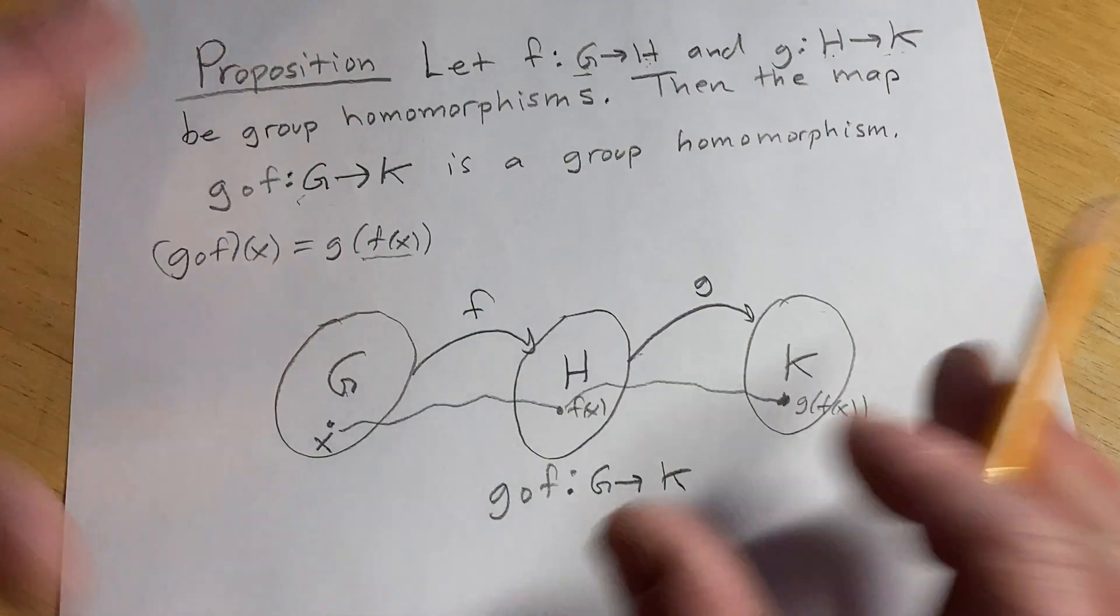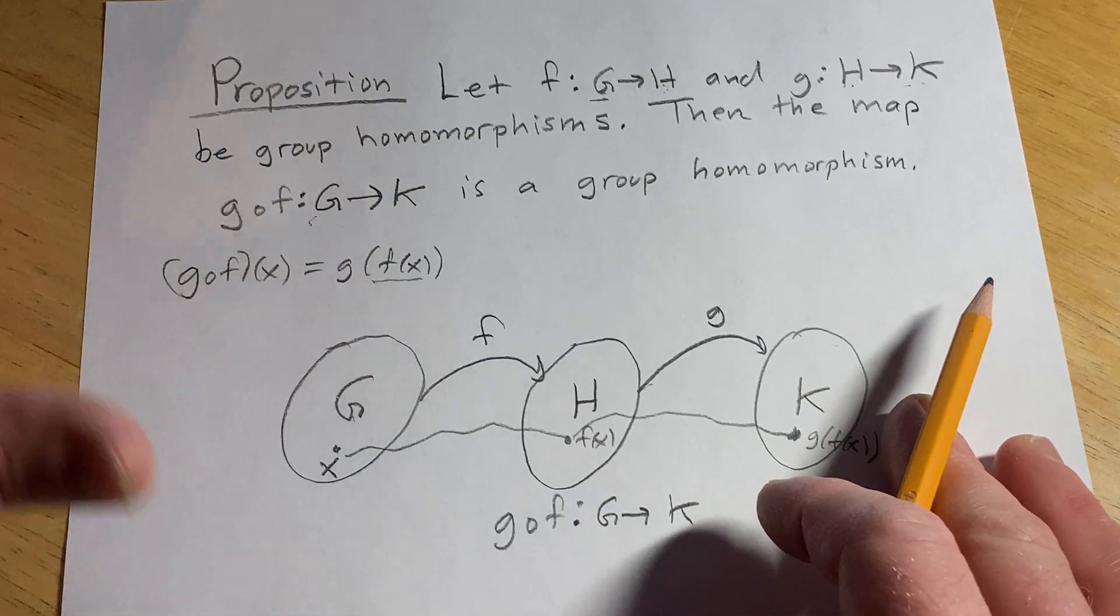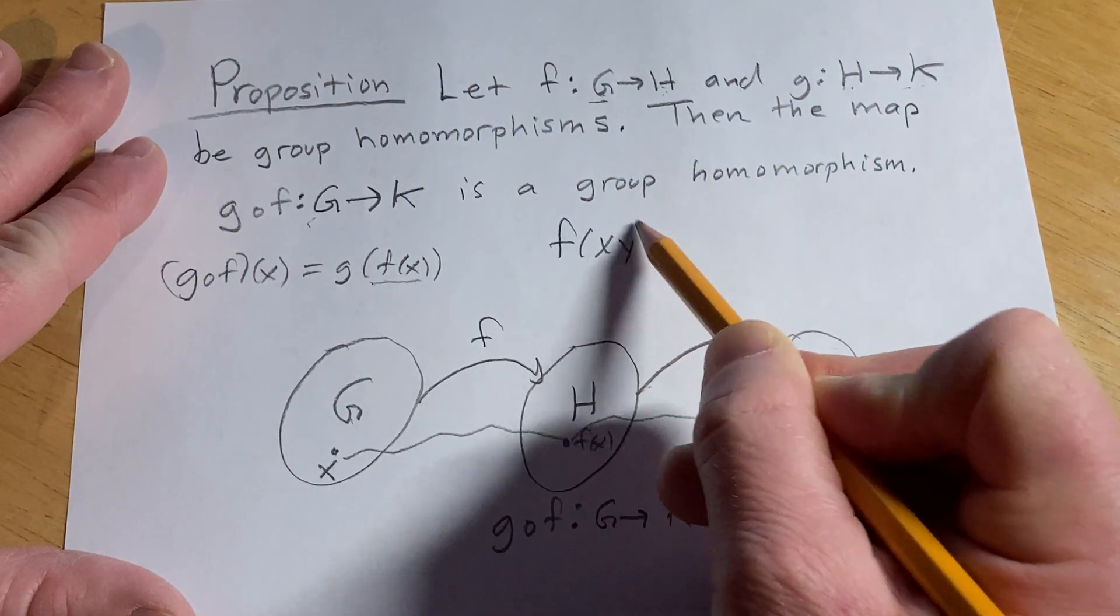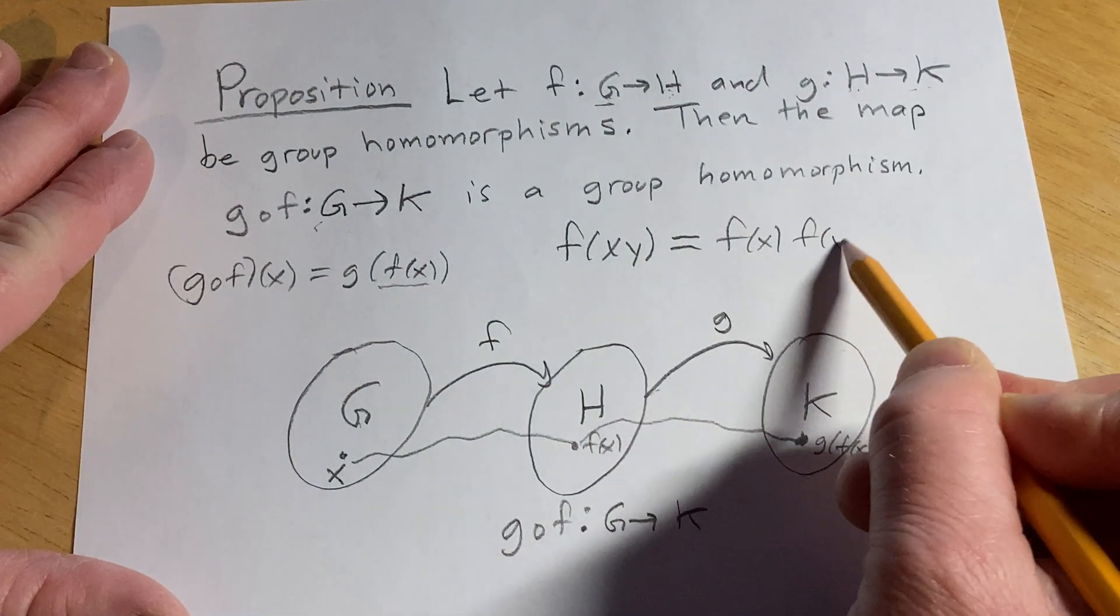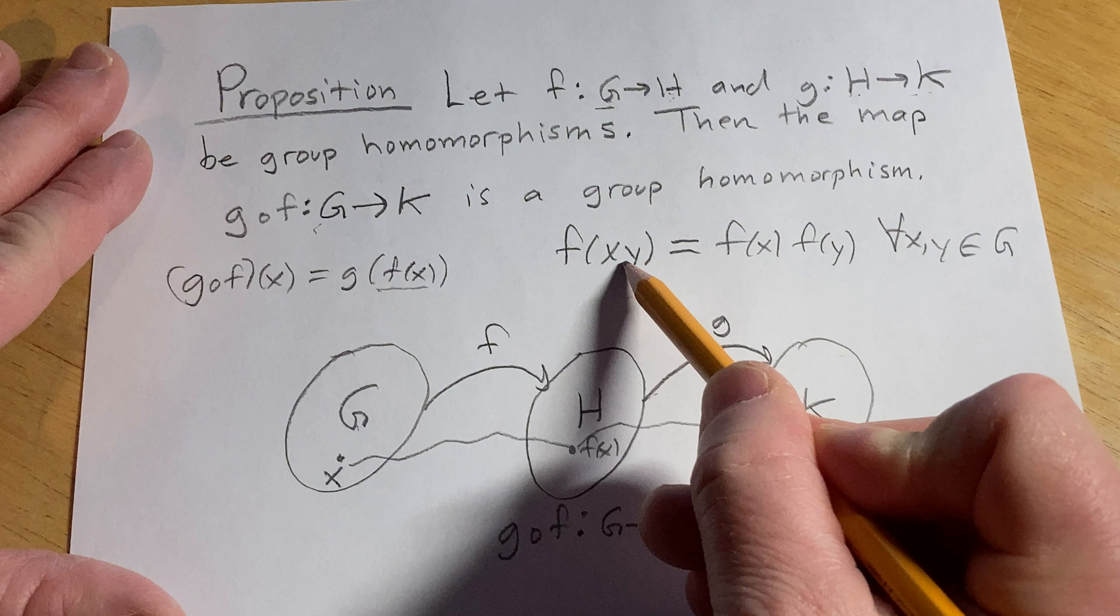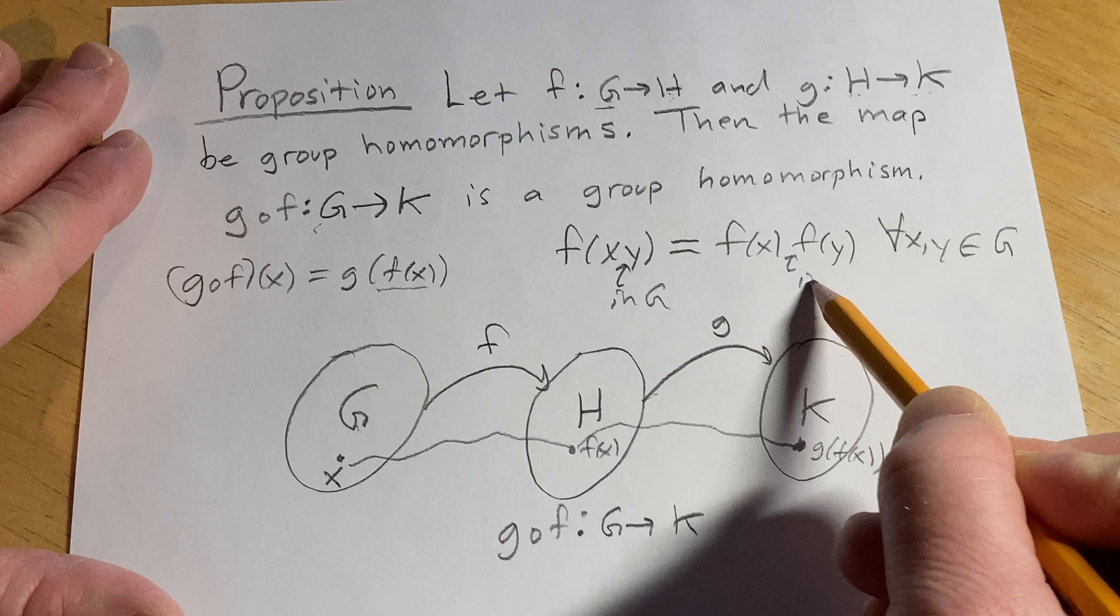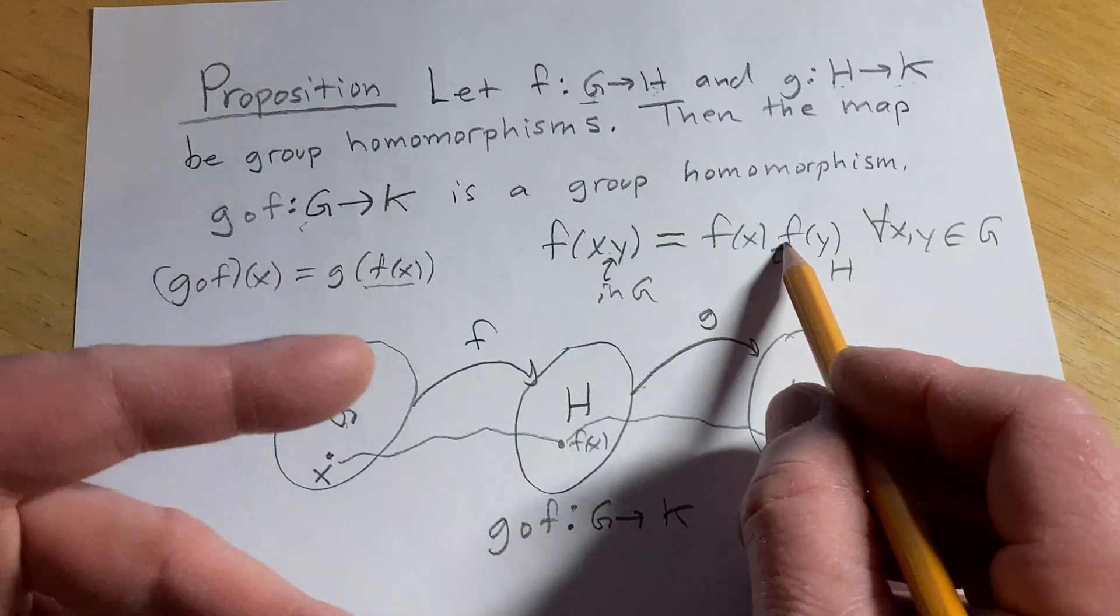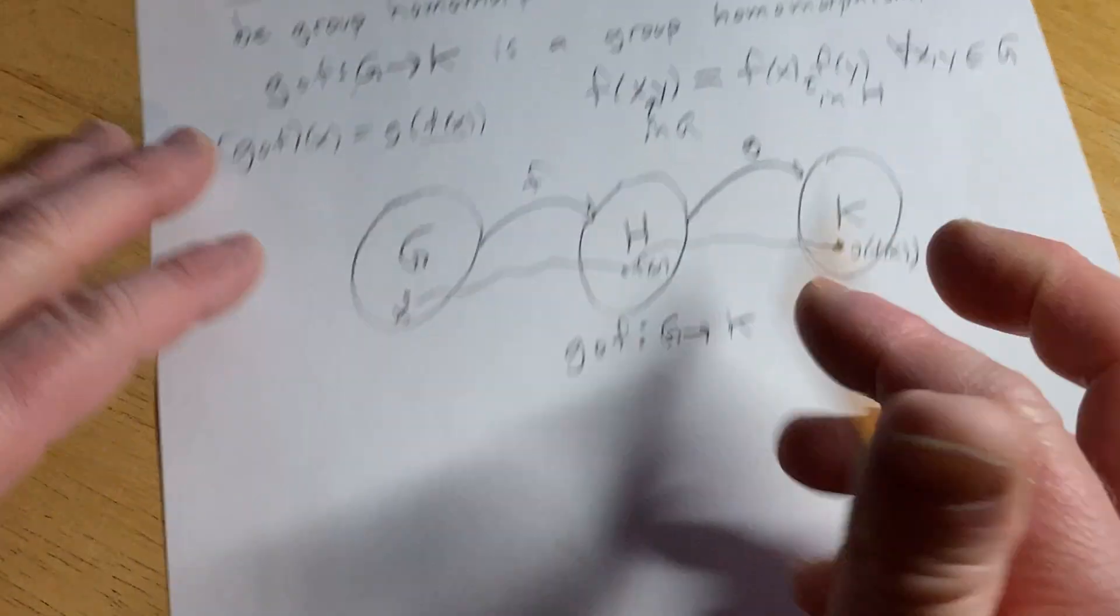All right, so we're going to prove this is a group homomorphism. So what is a group homomorphism? I probably should have told you at the beginning, in case you're watching this video and you don't know what it is. So f is a group homomorphism basically means that if you have f(x·y), that's going to be equal to f(x)·f(y) for all x, y in G. Where here the multiplication takes place in G, and then here it takes place in H. So these can be wildly different operations. This could be like addition, and this could be just regular multiplication. It's undetermined. We just call it an operation. All right, let's go through this proof.